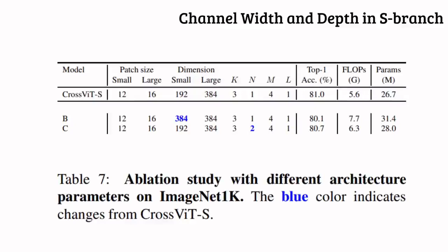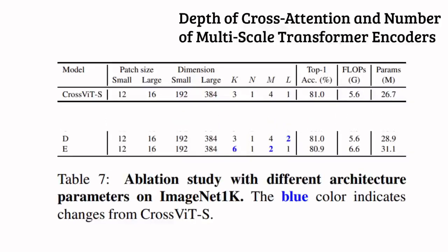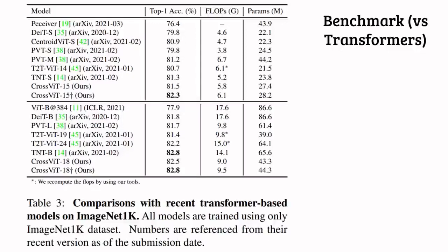From our perspective, this is consistent with what we saw in the previous slide — the large branch contributes more accuracy improvement than the small branch. Similarly, increasing the number of cross-attention layers for fusion does not improve the accuracy of the model, which means that we might have reached a bottleneck here.